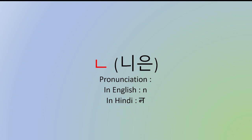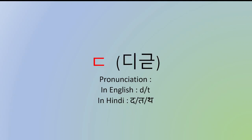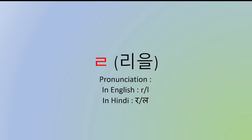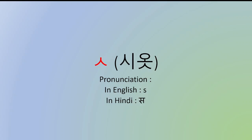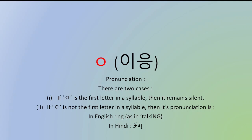Next is ㄴ — na. After that ㄷ — it's either da, ta, or tha. Then we have ㄹ — ra or la. Then we have ㅁ — ma. Then ㅂ — ba or pa. Then we have ㅅ — sur. Now, this consonant ㅇ has two pronunciations depending on its position. First, if this consonant is placed at the first position in a syllable as the first letter in a syllable,